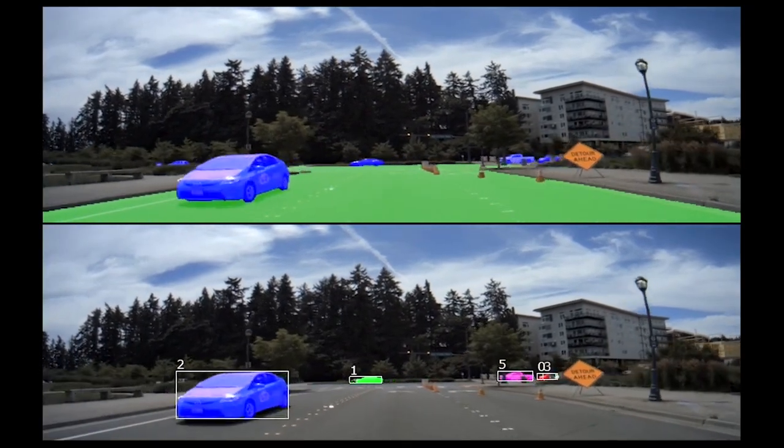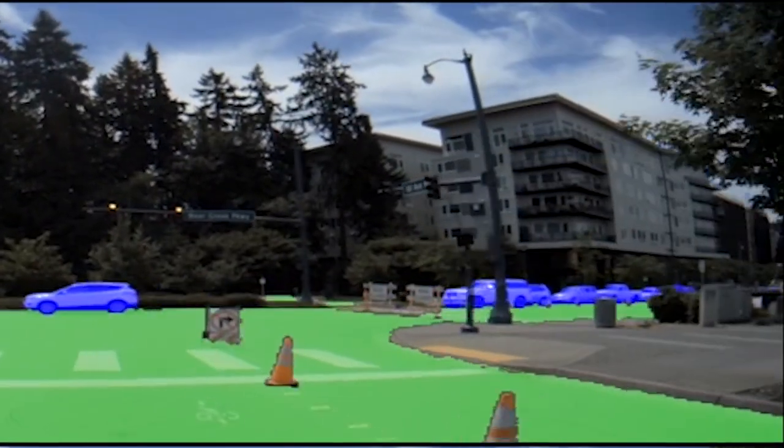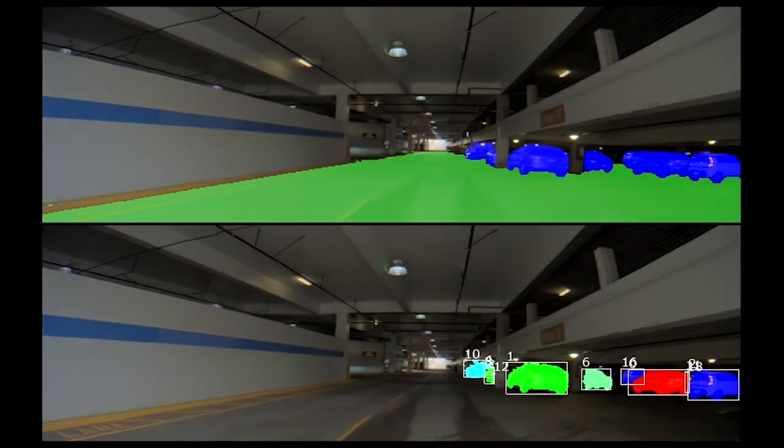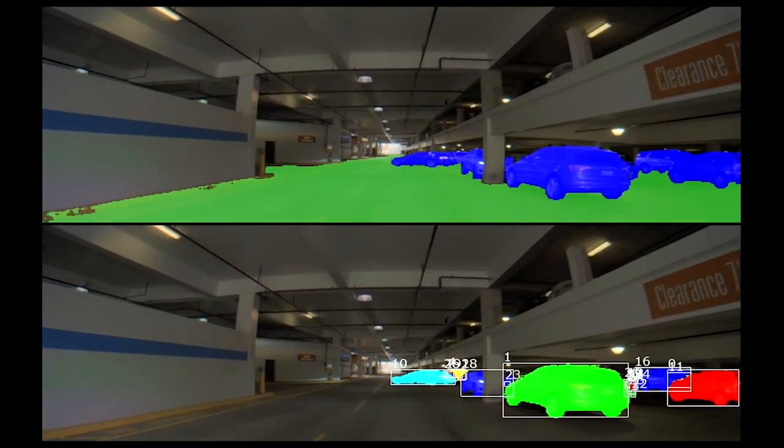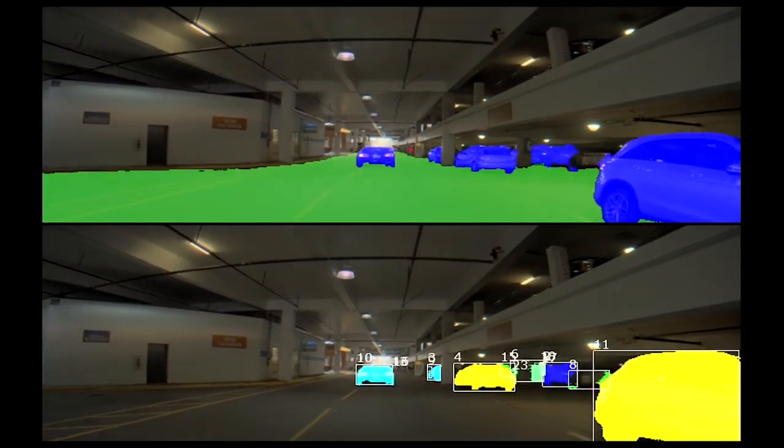And here we see accurate segmentation of drivable space around traffic cones and on-road traffic signs. In this clip, the panoptic segmentation DNN is segmenting both cars and drivable space accurately in an unstructured environment.